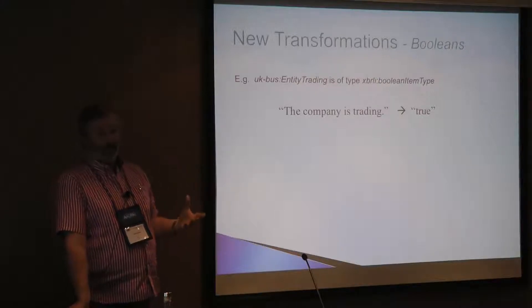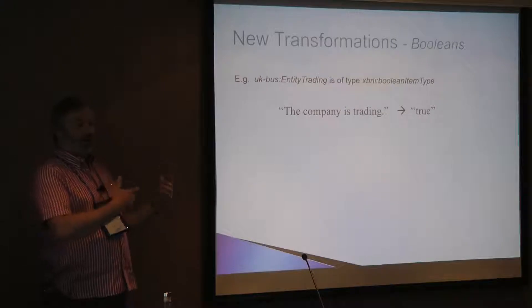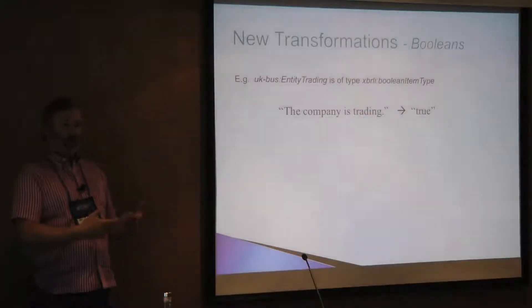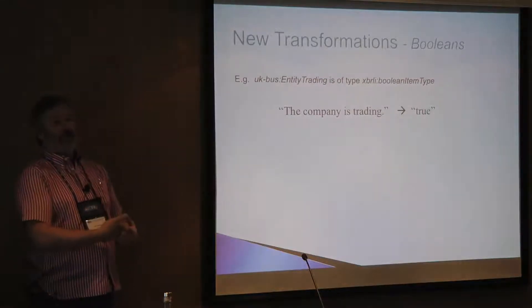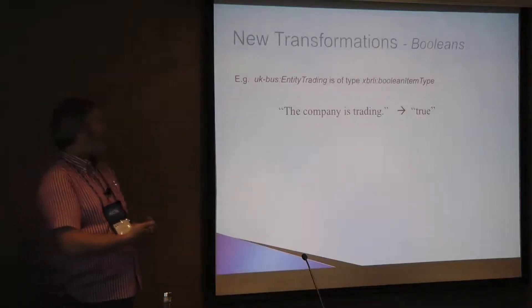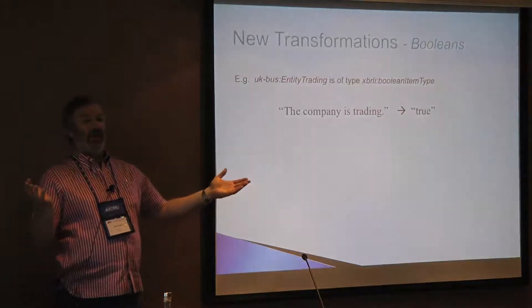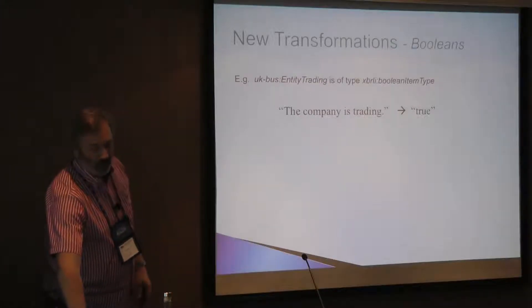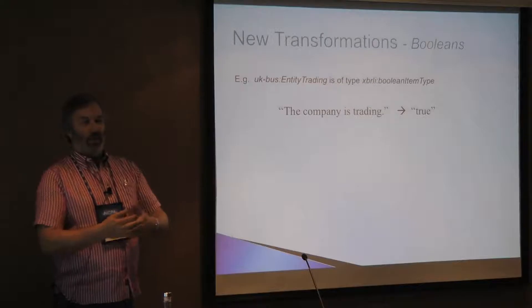Now that's fine — it means that the value of that fact gets into the instance document — but there is no correspondence between what a human being sees on the face of the document and that value. So there is an assurance issue about examining the document and trying to make sure that the human rendering and the computer-readable part actually correspond. There's more work to do to assure yourself that correspondence is correct. The phrase 'company trading' may appear on the face of the document and that Boolean setting of 'true' appears in the hidden section, but there's actually no relationship between them. So these two Boolean transforms are an attempt to link the markup on the face of the document with the target data.